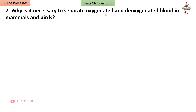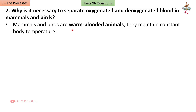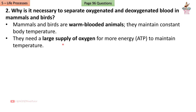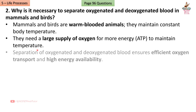Question 2: Why is it necessary to separate oxygenated and deoxygenated blood in mammals and birds? Answer: Mammals and birds are warm-blooded animals that maintain constant body temperature. They need a large supply of oxygen for more energy (ATP) to maintain temperature, and separation of blood ensures efficient oxygen transport and high energy availability.